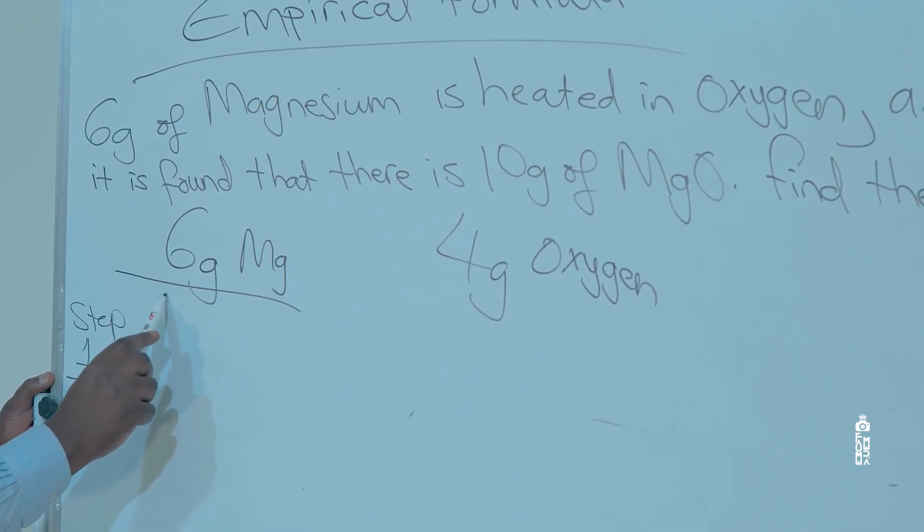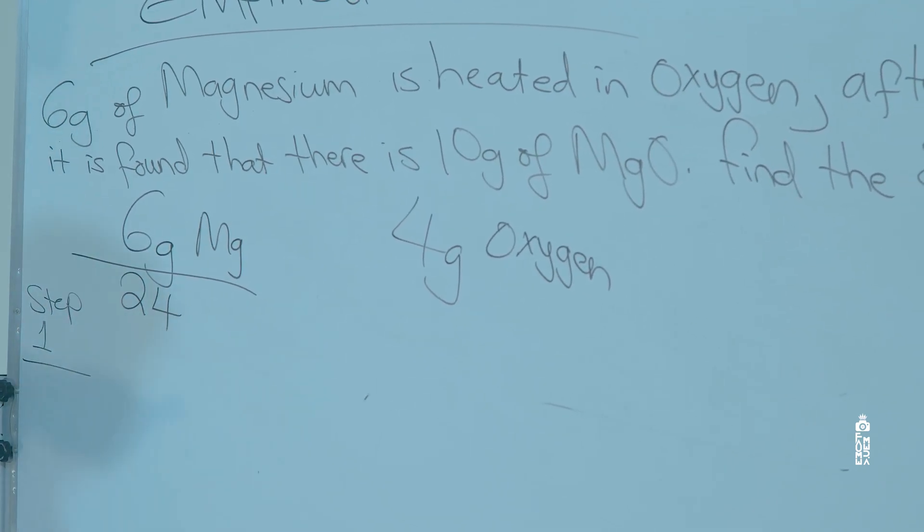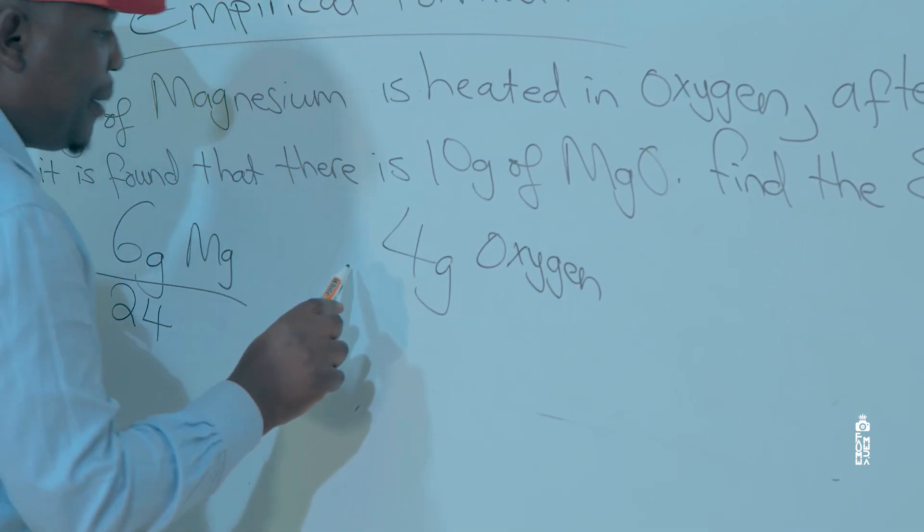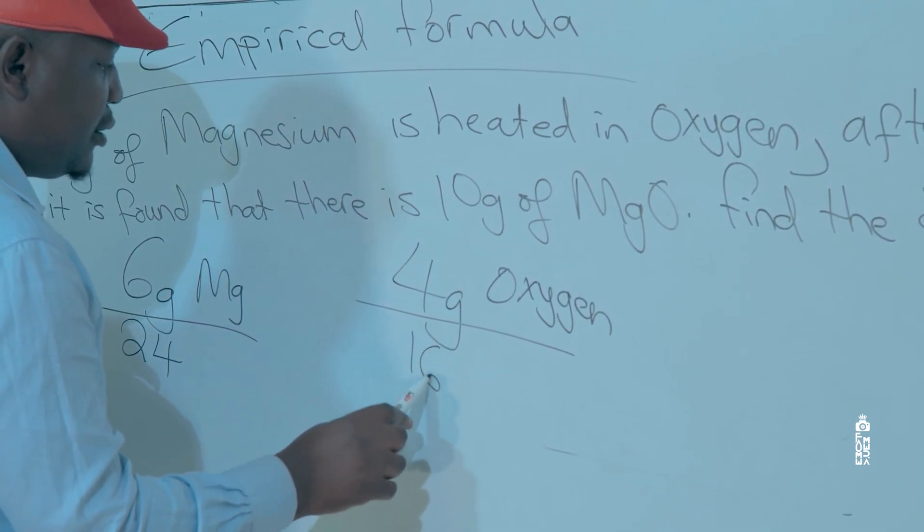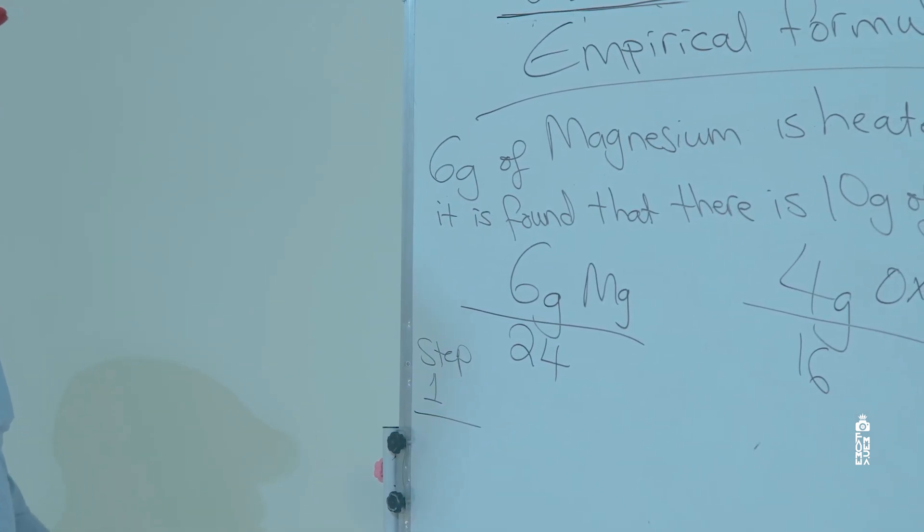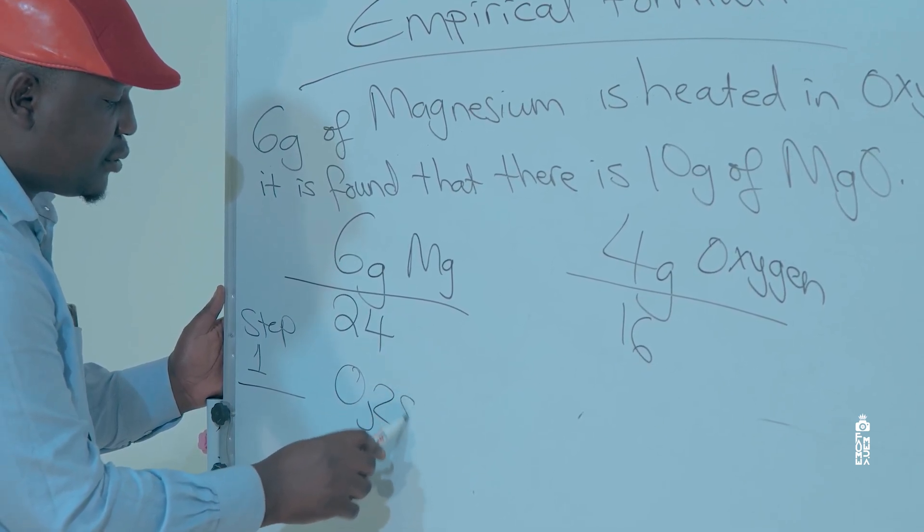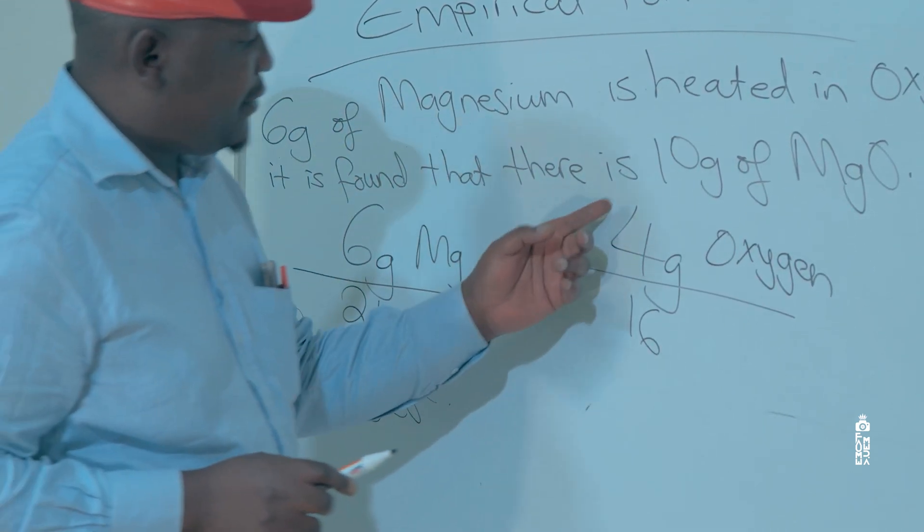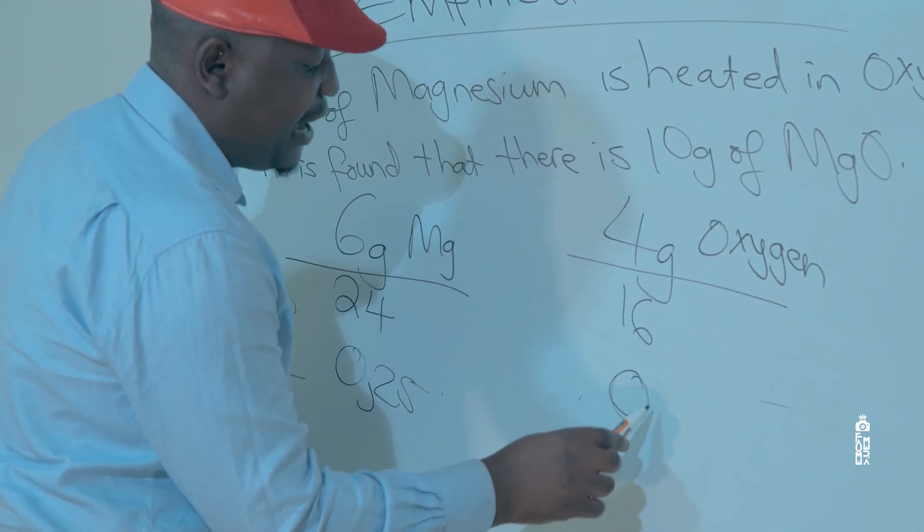So what you are going to do first and foremost, you are going to divide 6 grams of magnesium by the relative atomic mass of magnesium which is 24, and you are going to divide 4 grams of oxygen by the relative atomic mass which is 16. So 6 grams divided by 24 you are going to get 0.25, and then 4 divided by 16 you are also going to get 0.25.